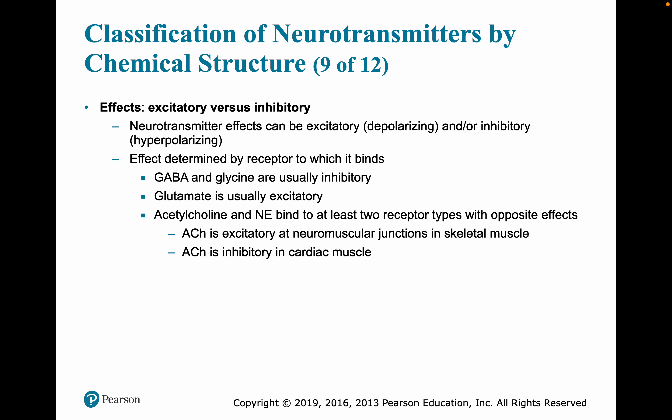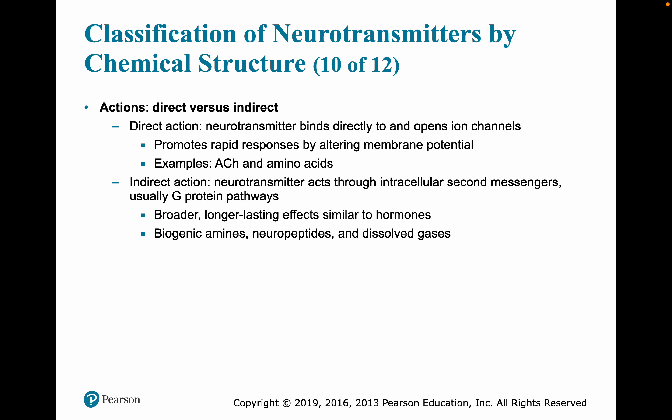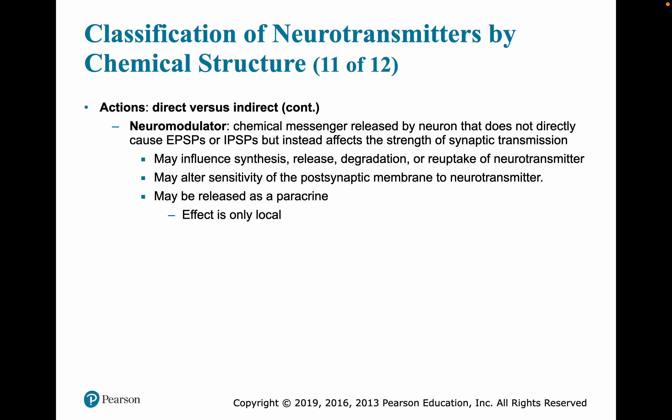Acetylcholine is excitatory at the neuromuscular junction but inhibitory in cardiac muscle. Regarding direct versus indirect actions: in direct action, a neurotransmitter binds to and opens an ion channel. In indirect action, the neurotransmitter works through a second messenger system. The difference is that second messengers give a broader, longer-lasting, amplifying effect, whereas direct action promotes rapid responses. Neuromodulators are chemical messengers released by neurons that don't directly cause excitatory or inhibitory effects, but instead affect the strength of synaptic transmission. They may influence the synthesis, release, degradation, or reuptake of neurotransmitters.